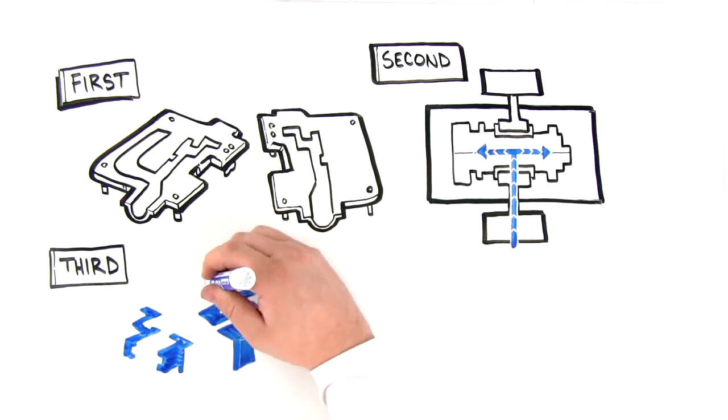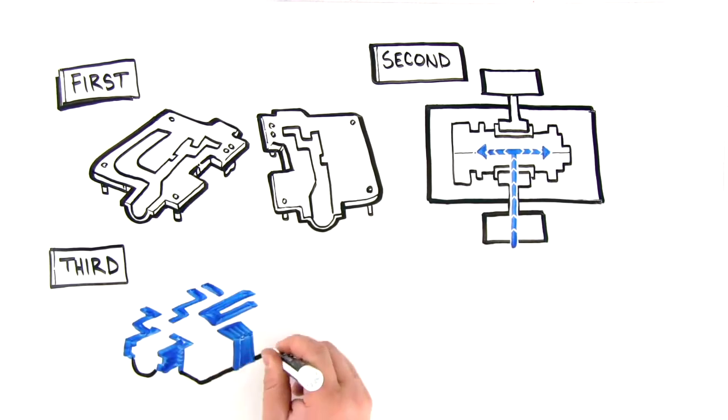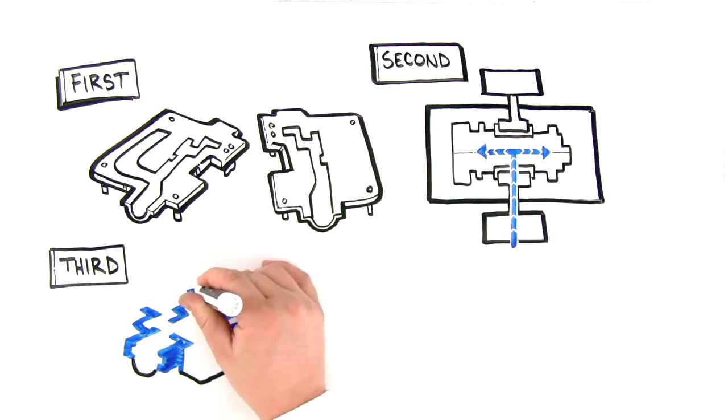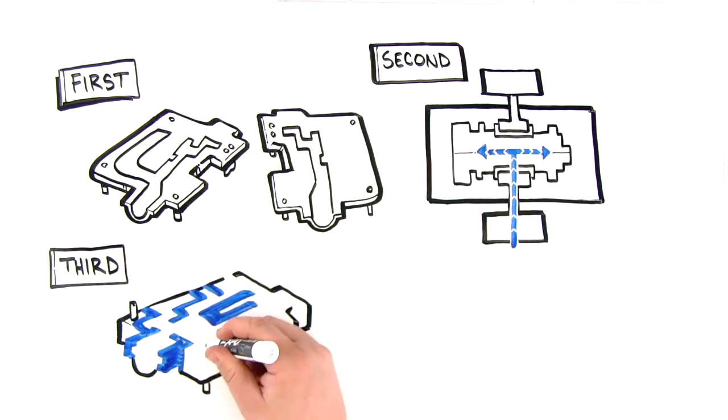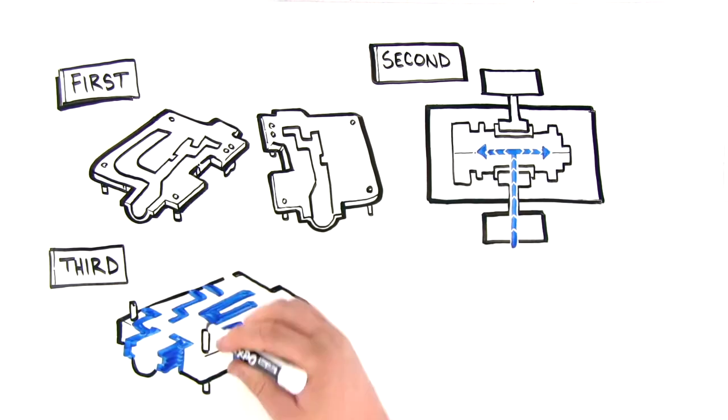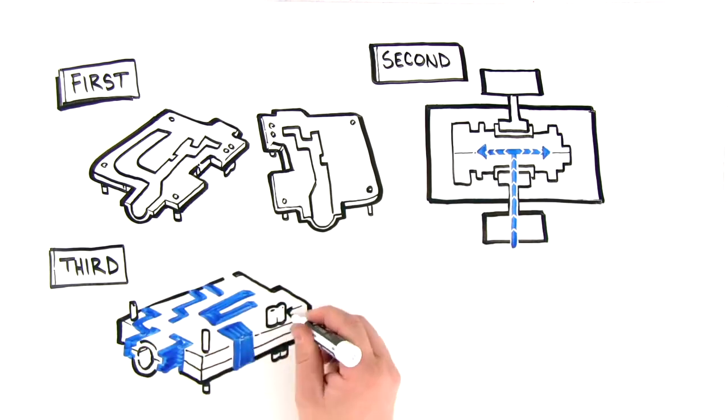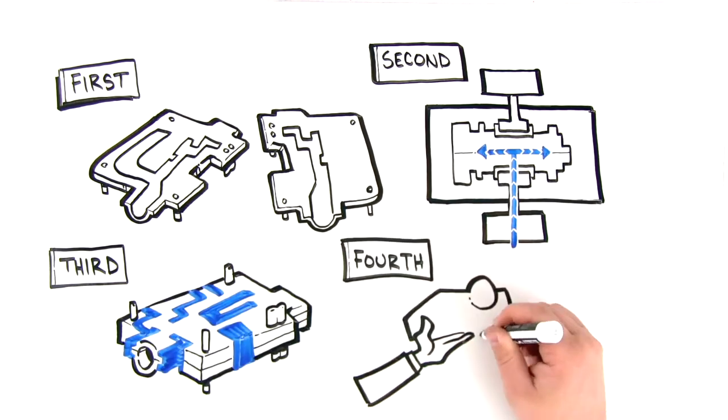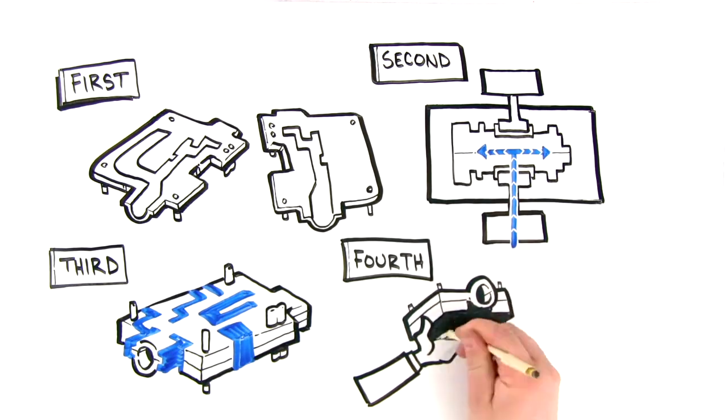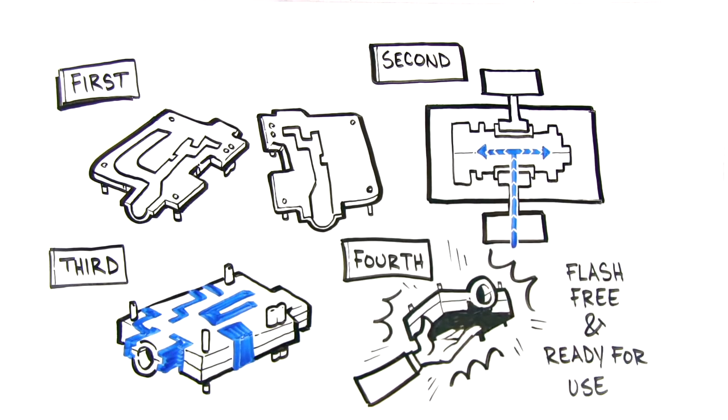ZAMAC-3 is the most common bonding material used in IMA, exhibiting a hardness of up to 82 Brinell and shear and tensile strengths of 31 and 41 KPSI. Finally, the tool opens and the assembled parts are ejected, flash-free and ready for immediate use.